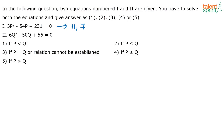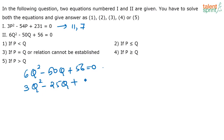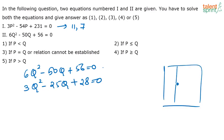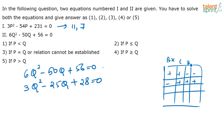The second equation is 6q² - 50q + 56 = 0. Since 2 is common, simplify to 3q² - 25q + 28 = 0. Again, the sign before bx is minus and the sign before c is plus — referring to the table, minus plus means both roots will be positive.